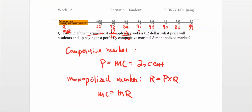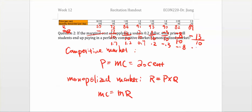Continuing the same process for the remaining scenarios: 7 divided by 10, 2 divided by 10, negative 3 divided by 10, negative 8 divided by 10, and negative 13 divided by 10. So the marginal revenue values are: 1.7, 1.2, 0.7, 0.2, negative 0.3, negative 0.8, and negative 1.3.